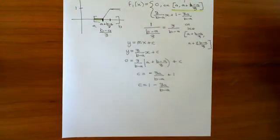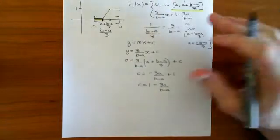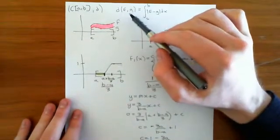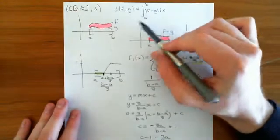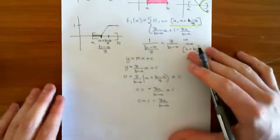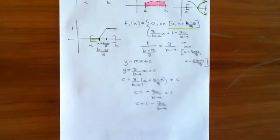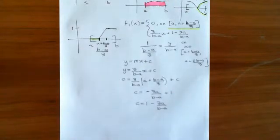Welcome to part 2 of this video, in which we are discussing why the set of all continuous functions on an interval [a, b], under the integral metric — where the distance between two functions f and g is defined to be the integral from a to b of |f minus g| dx — does not form a complete metric space. This is a very important intuition point: even if you have the same set, because the metric is different, it is a completely different metric space.